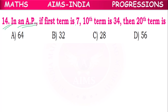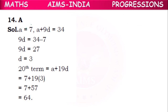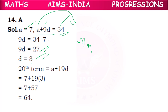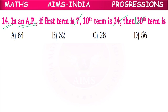Fourteenth question: In an AP, the first term is 7 and the tenth term is 34. Find the twentieth term. We have a = 7 and T10 = a + 9d = 34, so 7 + 9d = 34, giving 9d = 27, so d = 3. The twentieth term T20 = a + 19d = 7 + 19×3 = 7 + 57 = 64. Option A is correct.